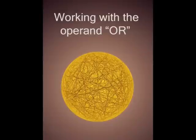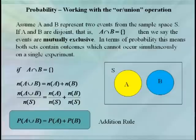So let's start with the OR operator, which corresponds to the set operation union. In order to compute the probability of event A or event B, we're going to need to compute the cardinality of the union of A and B. Initially, let's suppose that A and B are two disjoint sets — that is, they do not overlap. In the study of probability, when our sets correspond to disjoint events, we say that the events are mutually exclusive.